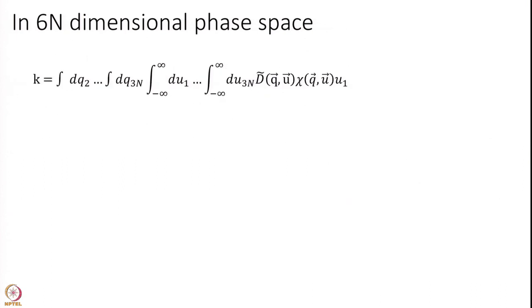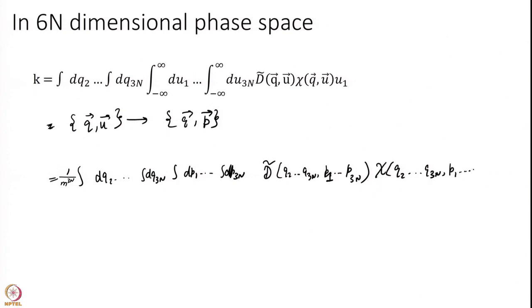Just one remark the point is we really in statistical mechanics integrate over a qp space. I want to go from this qu space to qp space momentum space. That is straightforward. I just write this in p space instead this integral. I am integrating overall momenta instead of speeds. This d which would depend on q2 to q3 n p1 to p3 n, chi q2 to q3 n p1 to p3 n and the u1 is nothing but p1 over m. P equal to mu. This is my more general formula.